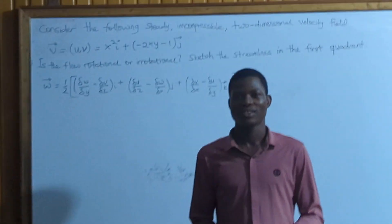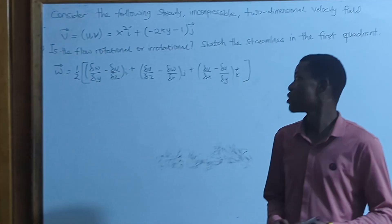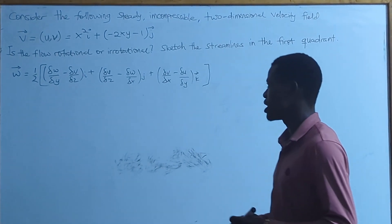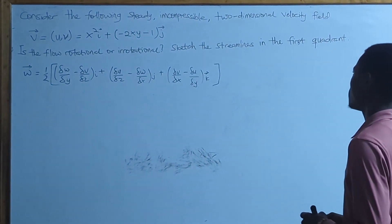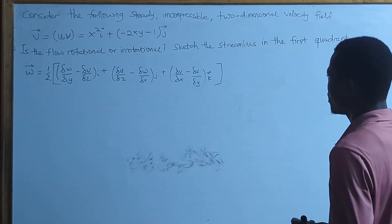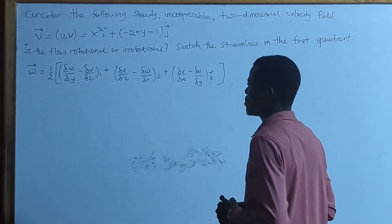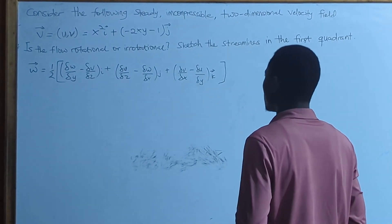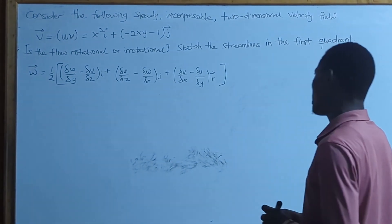Hello everyone, welcome back to this channel. We are going to solve the question on the board. The question is: consider the following steady, incompressible, two-dimensional velocity field. We have to find whether it is rotational or irrotational and also sketch the streamlines.